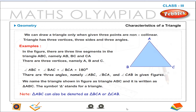Triangle. A triangle has three vertices, namely A, B and C. Angle ABC plus angle BAC plus angle BCA is equal to 180 degrees. There are three angles: angle ABC, angle BCA, and angle CAB. The triangle shown in the figure is named triangle ABC and written as triangle ABC. Note: triangle ABC can also be denoted as triangle BCA or triangle CAB.